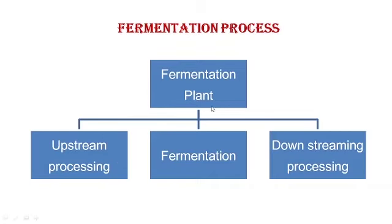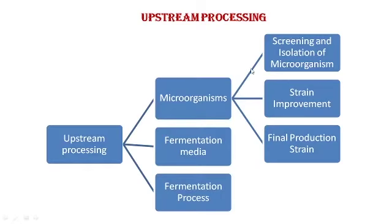The operations carried out in a fermentation plant can be divided into three levels. At the first level, we have the processes that come under upstream processing. After upstream processing is over, the actual fermentation starts at the plant level. After the fermentation period is over, product purification is part of downstream processing.